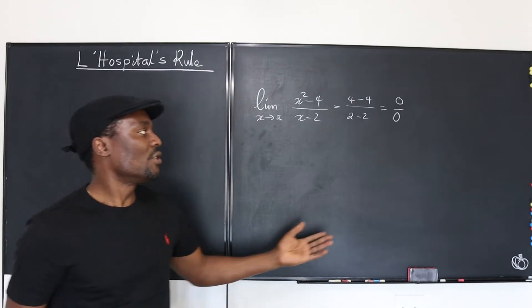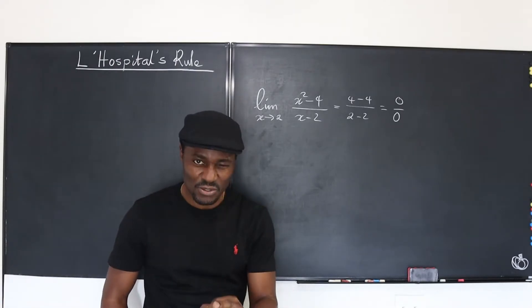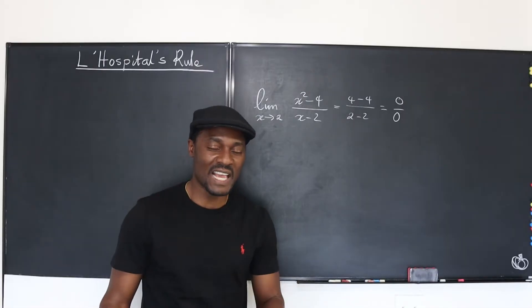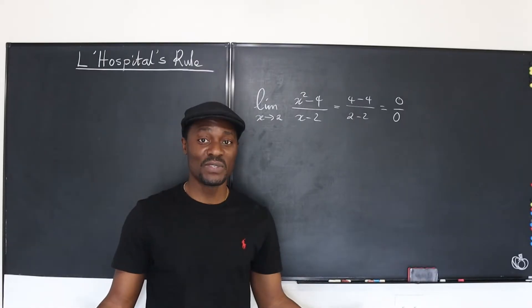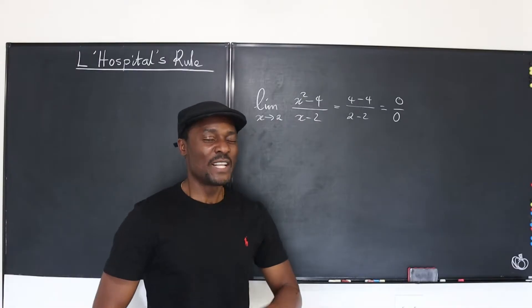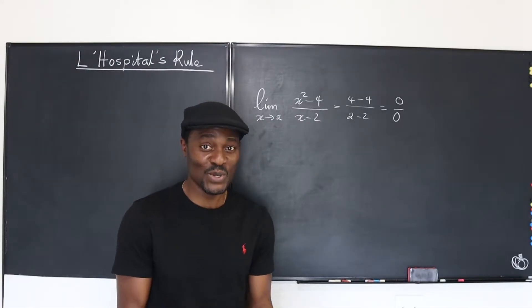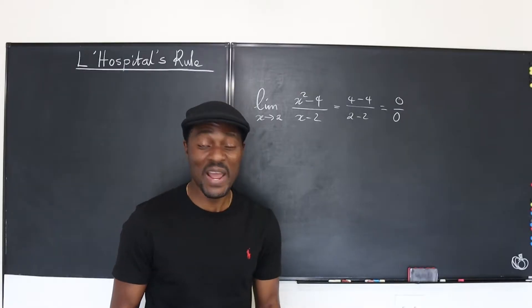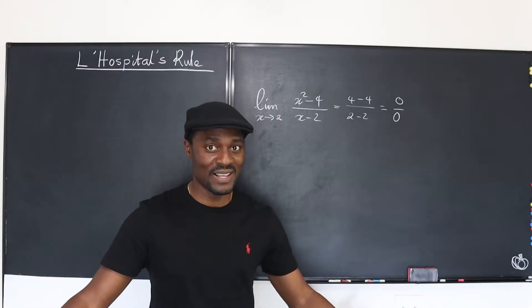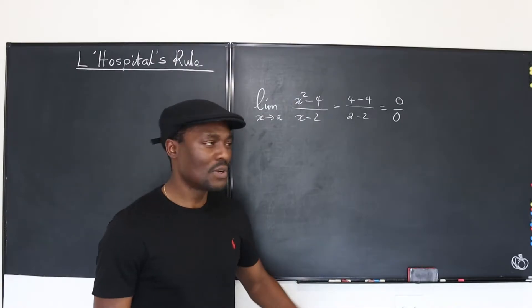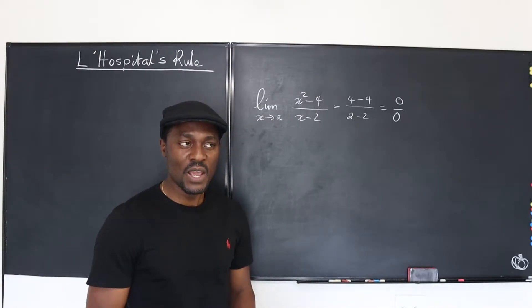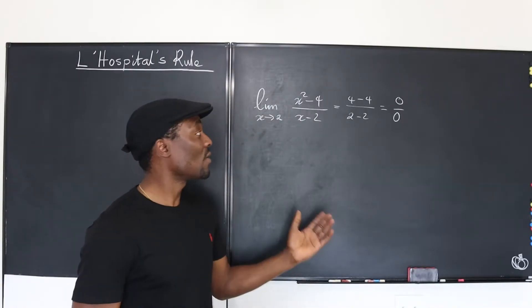Now 0 over 0 is the indeterminate form in all of mathematics and you cannot accept 0 over 0 as an answer. It is one of the seven deadly sins of mathematical expressions. So you cannot write 0 over 0 anytime, anywhere. So when you get 0 over 0, you have to throw the answer away or you have to find another way of solving the problem.